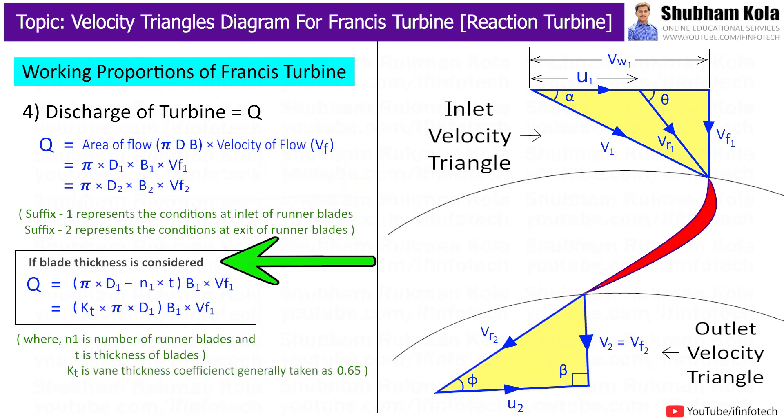And if blade thickness is considered, the discharge formula will be this one where small n1 will be the number of runner blades and small t is the thickness of blades.